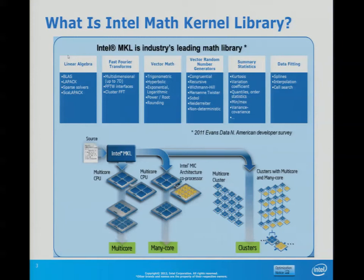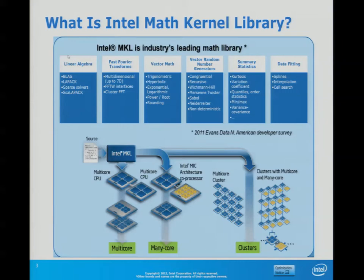There are also facilities for parallelized random number generation. MKL also gains hardware support — it is always enabled for the latest Intel architecture, and once an architecture is no longer current, it remains as-is unless a bug or performance drop is found. For example, for vector random number generation, Ivy Bridge hardware instructions for random number generation are already included. Summary statistics and data fitting are also part of the MKL functionality range.